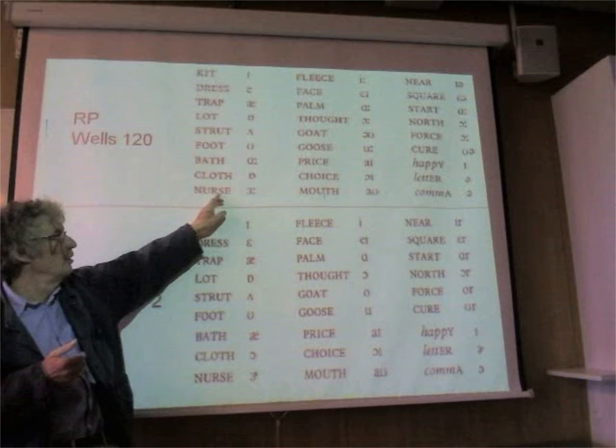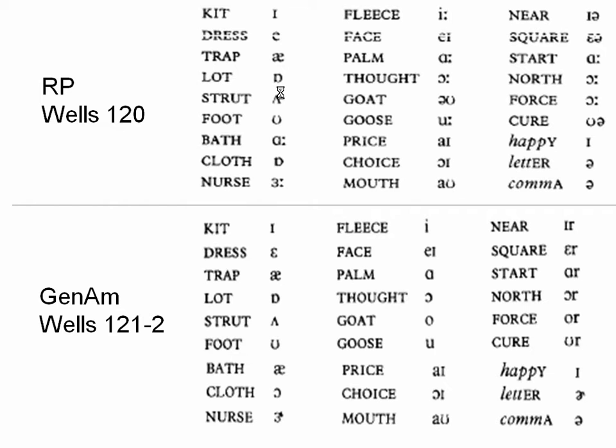For instance, the nurse vowels - when we get to Scotland, all the nurse words split up into a lot of different groups, because you've got nurse, ward, work, herd, and university. All the nurse words split up into different groups.